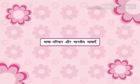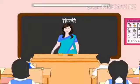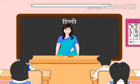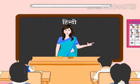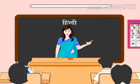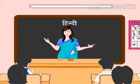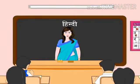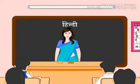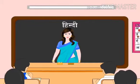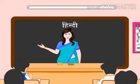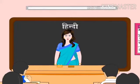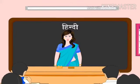Bhasha pariwar aur Bharatiy bhashaen: Aisi bhashaon ka samooh, jinका janm kisi ek mool bhasha se hua hai, bhasha pariwar kehlaata hai. Ek hi mool bhasha se janm lene ke kaaran, un sabhi bhashaon mein kuch samanta hoti hai. Vishwa ki lagbhag 3000 bhashaon ko 12 bhasha pariwaron mein baata gaya hai.